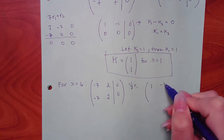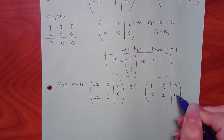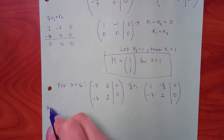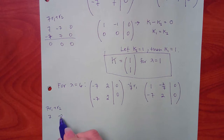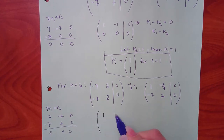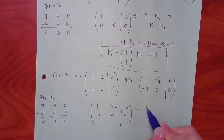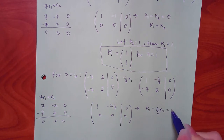Multiply row 1 by negative one-seventh to get a leading 1. Then 7 times row 1 plus row 2 gives 7, negative 2, 0 and negative 7, 2, 0 — all zeros again.